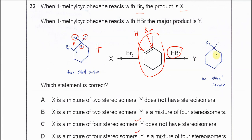From this product, we can see that this carbon is not a chiral carbon. It has one group, two groups, and then this group and this group are actually the same — same sequence, same arrangement. So this carbon is not a chiral carbon because these two substituents are considered the same group. No chiral carbon means no stereoisomers. So the answer is C.